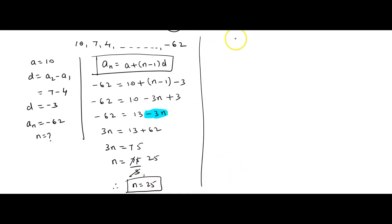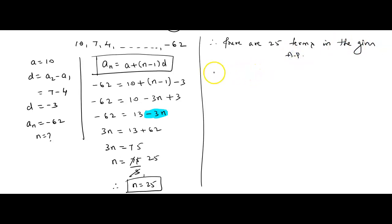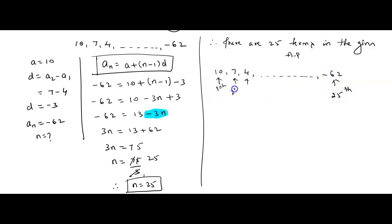Therefore, there are 25 terms in the given AP. This means that from the sequence 10, 7, 4, ..., minus 62 is the 25th term. We have to find the 11th term from minus 62, which is the last (25th) term.